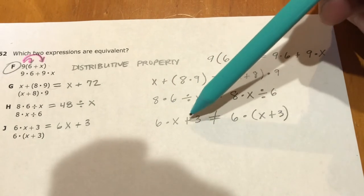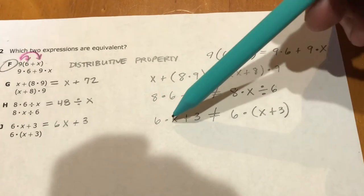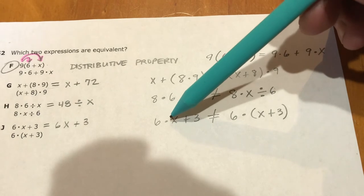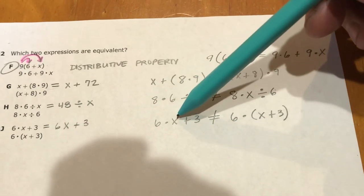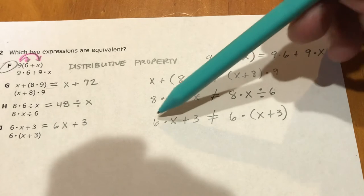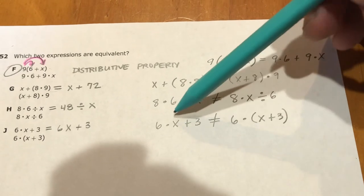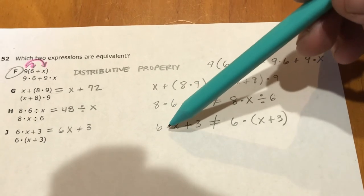The last one, 6 times x plus 3, again, they tried to make this the associative property or something like that. On this side over here, following PEMDAS, you would have to do 6 times x first. Over here, once you throw these parentheses in, you have to do x plus 3 first.